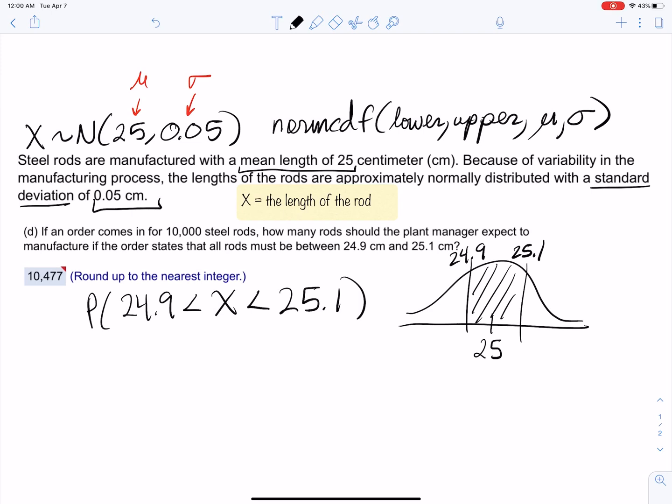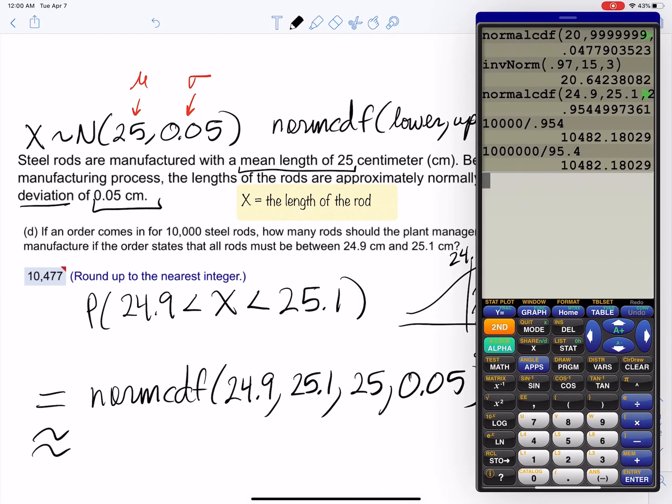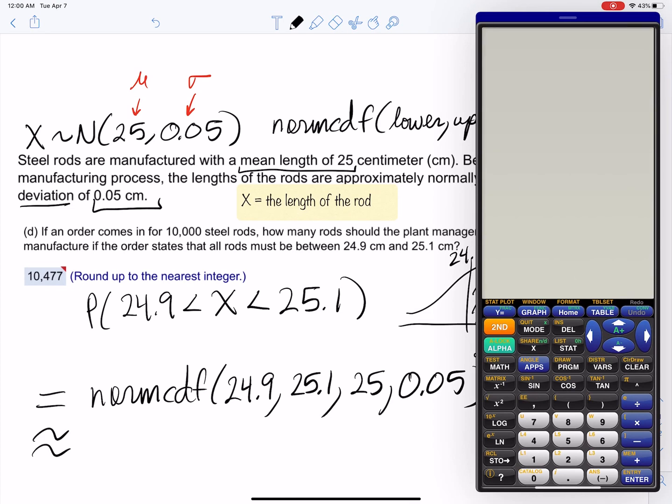This is going to be equal to normalcdf with lower 24.9, upper 25.1, mean which is 25, and standard deviation 0.05. We've got to be precise here. If you round too much you're going to get the wrong answer. Distribution is right down here in vars, so distribution under the arrow, second.